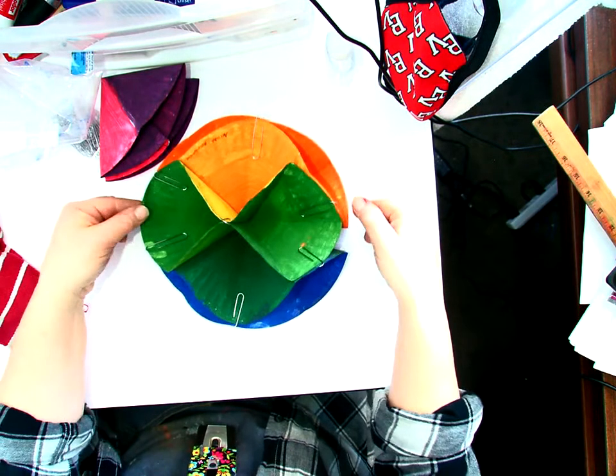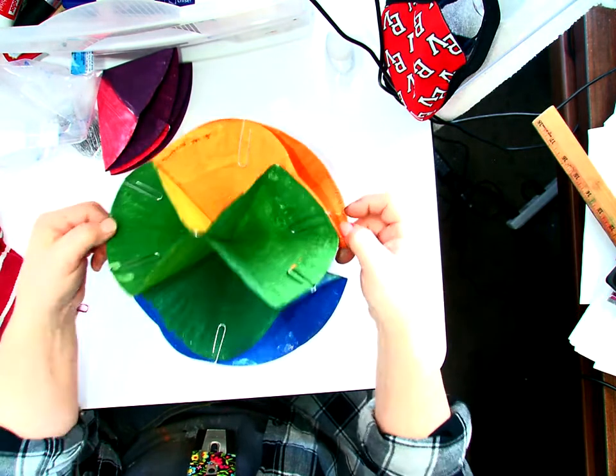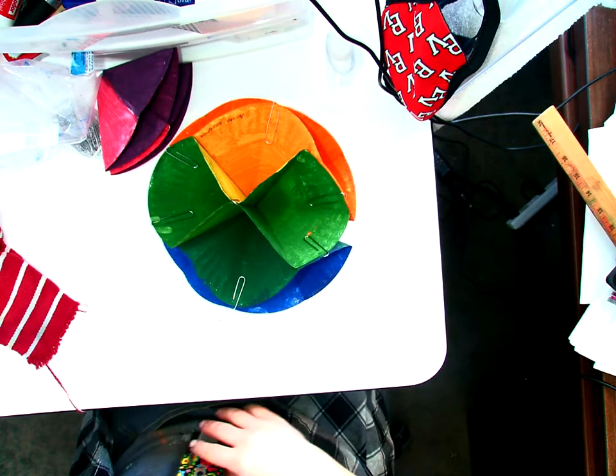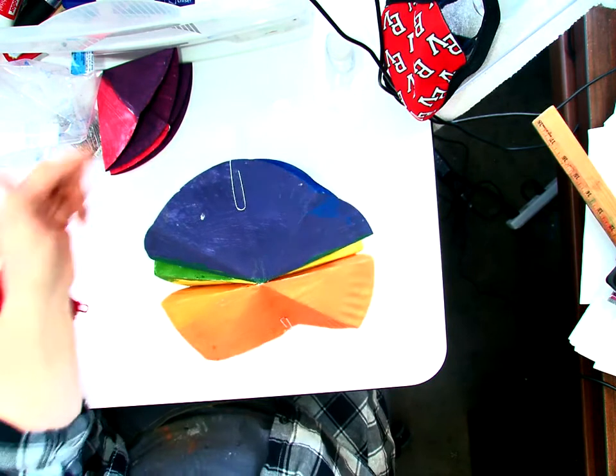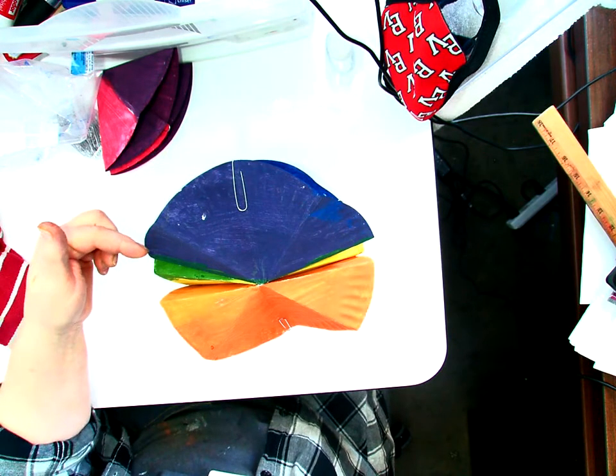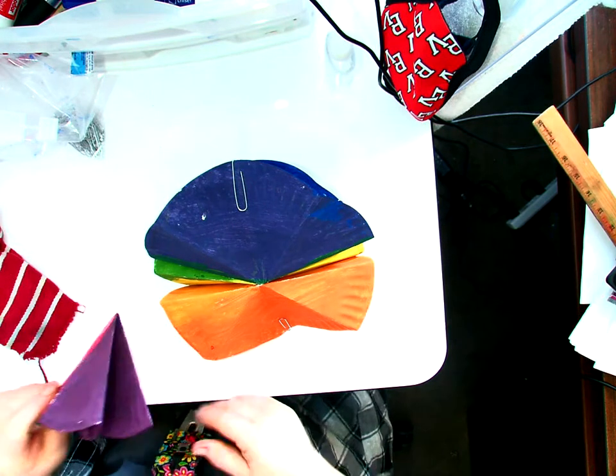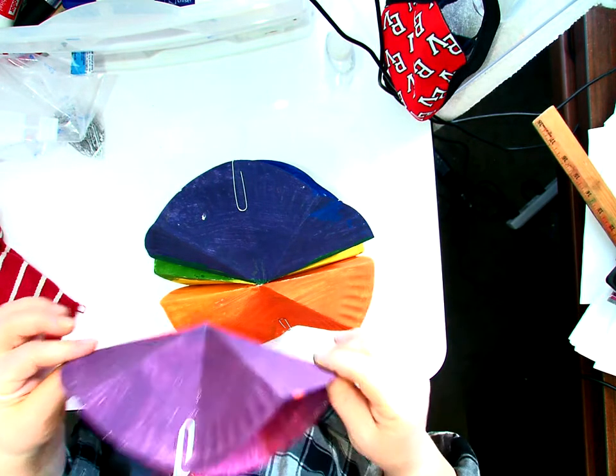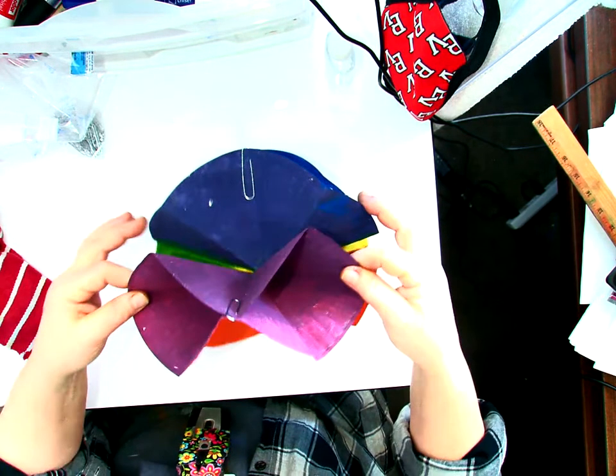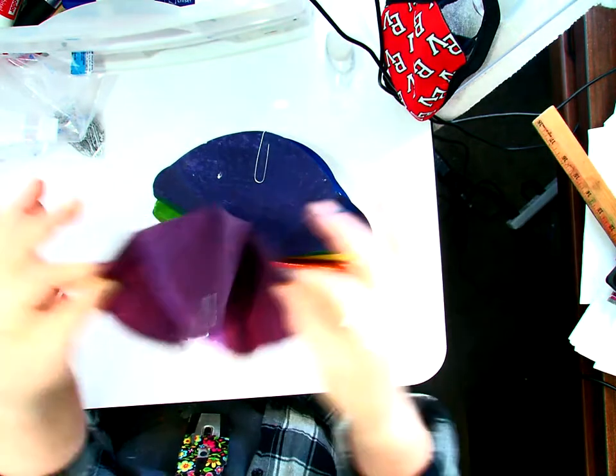Now I have three-fourths of the color wheel put together. So I am now going to take—I've got purple, excuse me, that is blue violet, not purple. And I am going to put blue violet by violet.